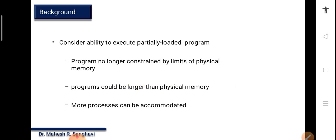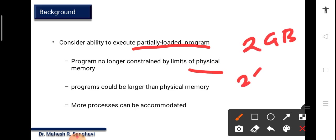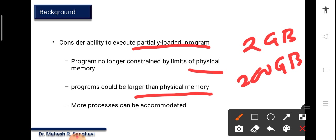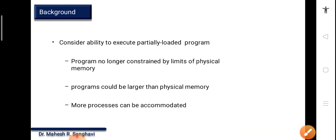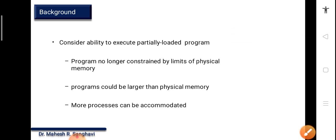Consider the ability to execute a partially loaded program. The program will not be fully loaded — only partially. This means the program is no longer constrained to the limits of physical memory. Physical memory can be, say, 2 GB and the hard disk can be 200 GB. Programs could be larger than physical memory, and more processes can be accommodated. If the size of a program is greater than the size of your RAM, that's why we need the background of virtual memory.